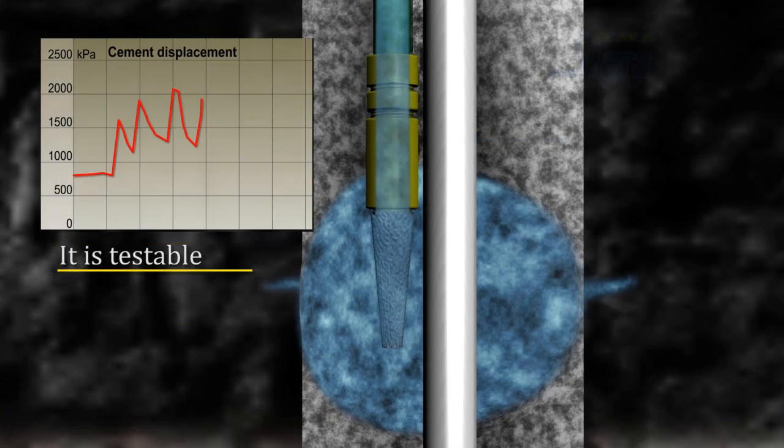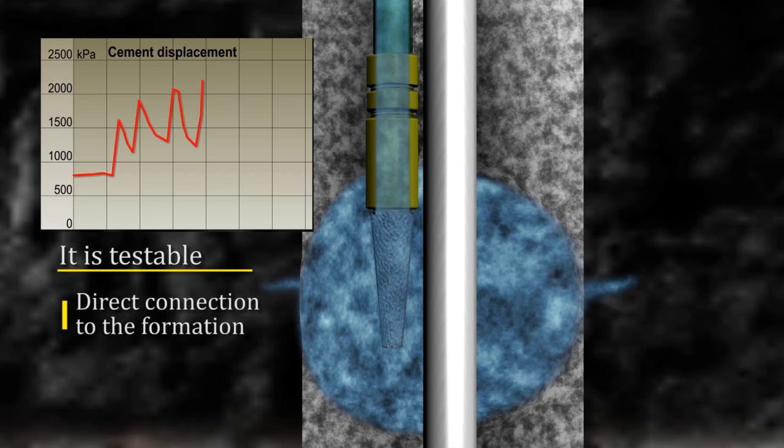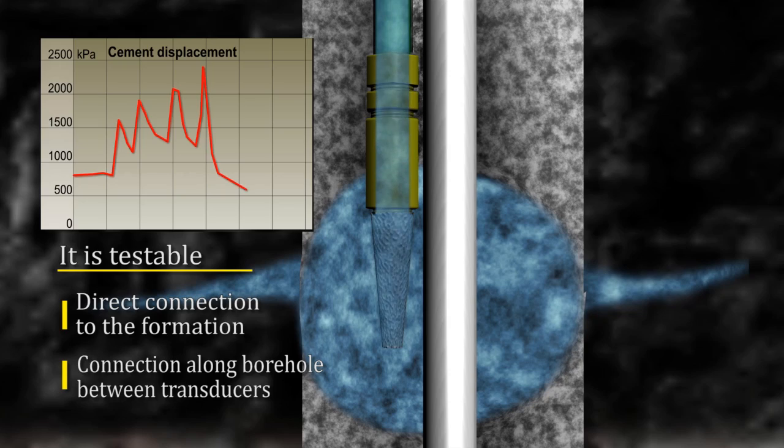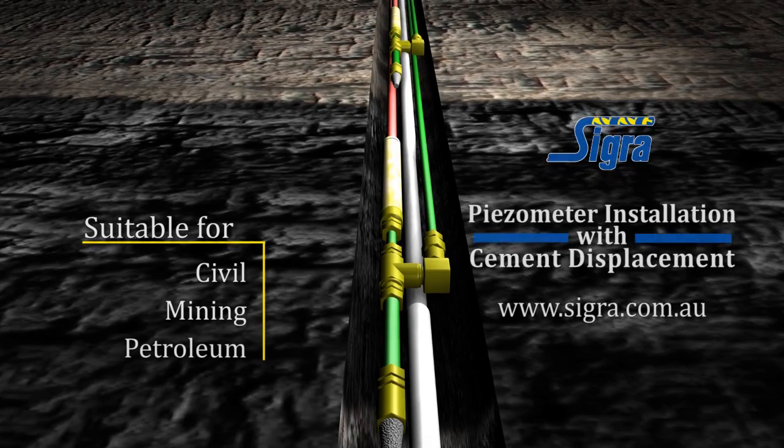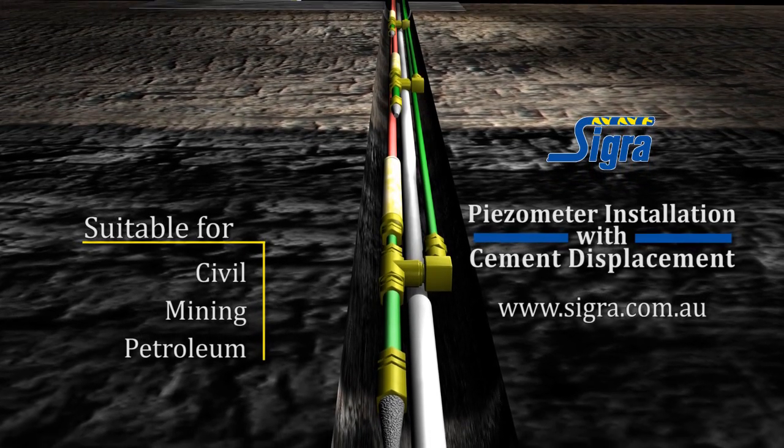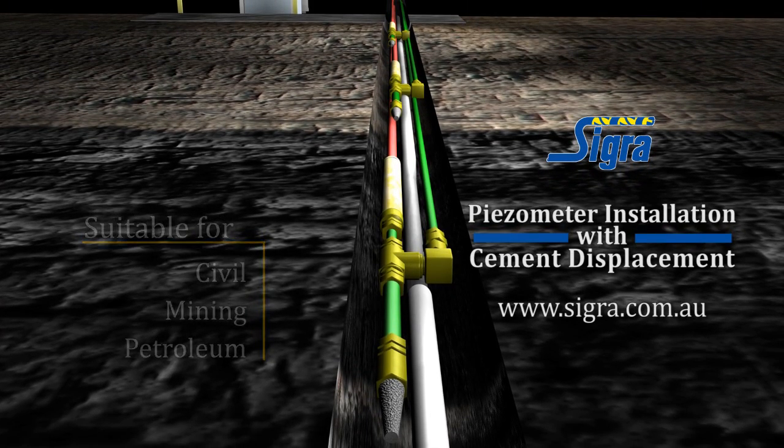The transducer installation method is testable for both direct connection to the formation and connection along the borehole between transducers. It is suitable for civil, mining and petroleum industry purposes and can be used in single or multiple transducer installations.